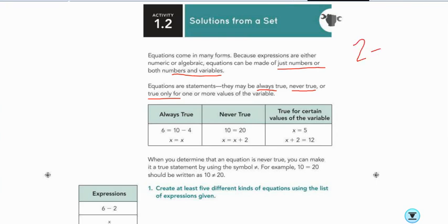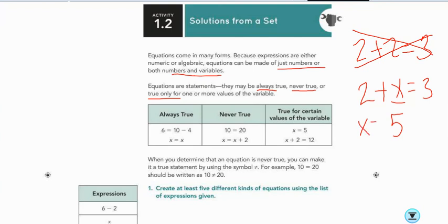So, for example, 2 plus 2 equals 3. This is never true. But 2 plus x equals 3. This could be sometimes true. If x is 1, it's true. But if x is 5, it's not true. So it's sometimes true.